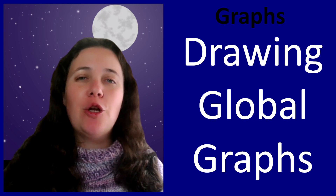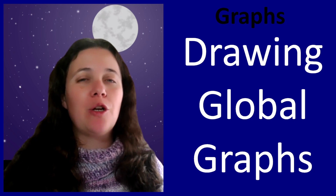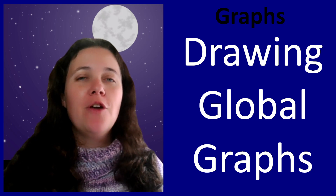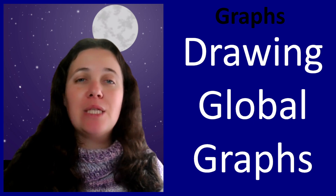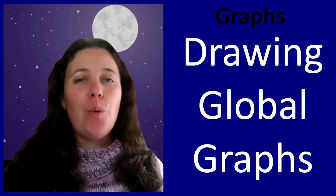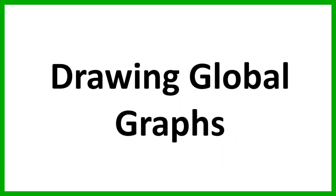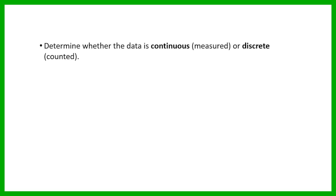Hi, in this video we're going to be learning all about drawing global graphs. First let's take a quick look at the process that we need to follow when we're going to draw a global graph. The first thing you need to do is determine whether the data that you're working with is continuous or discrete. If it's continuous it means that the data is measured, and if it's discrete it means that it is counted.